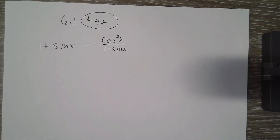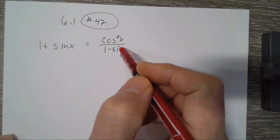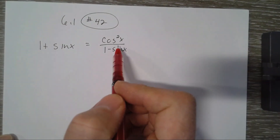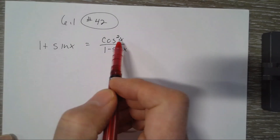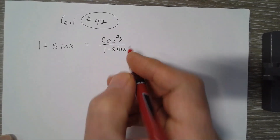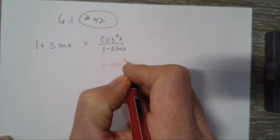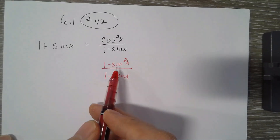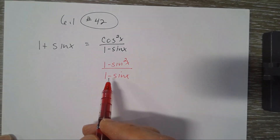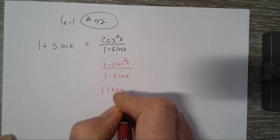6.1 number 42, verifying identities. I'm going to work on the right side here. Everything's in terms of ones and sines other than this cosine squared, so I'm going to rewrite cosine squared as 1 minus sine squared x. That is a difference of squares, so I can factor it as 1 plus sine x times 1 minus sine x.